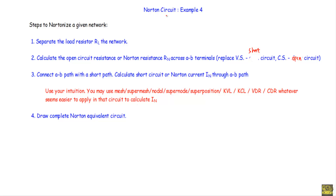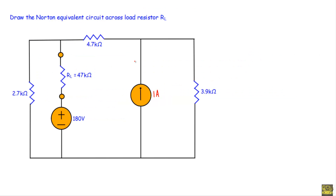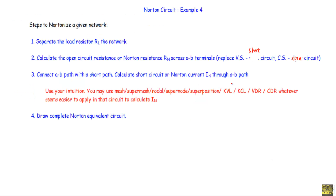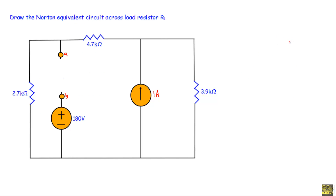In this video I will show you another example of a Norton equivalent circuit. To draw the Norton equivalent circuit across the load resistor RL, our load resistor RL is connected across terminals A and B. We have to draw the Norton equivalent circuit across this load resistor RL, so first we will separate the load resistor RL from the network.